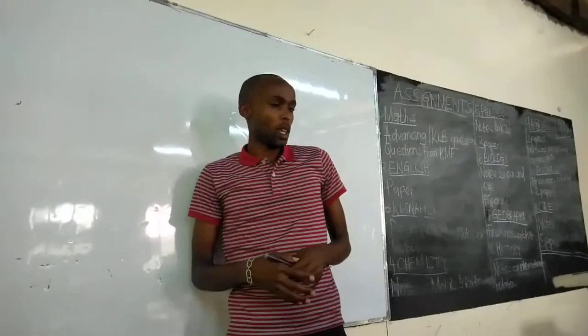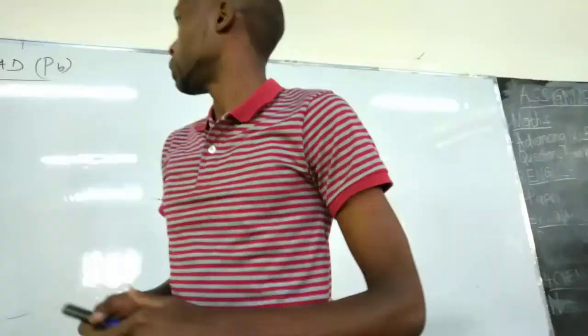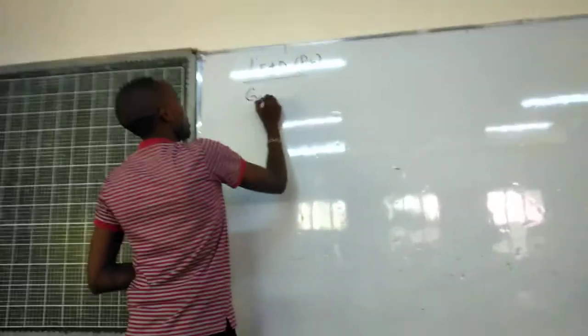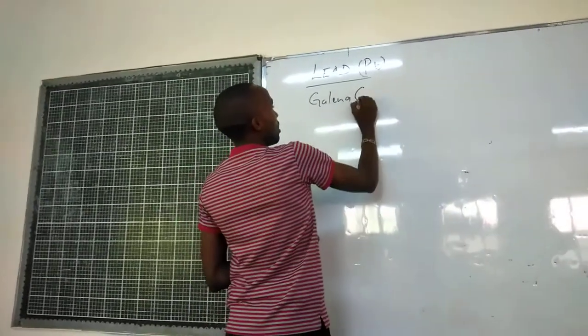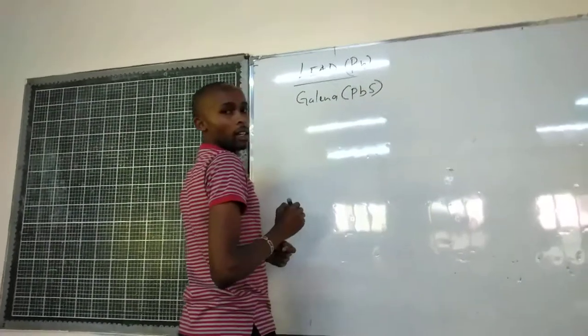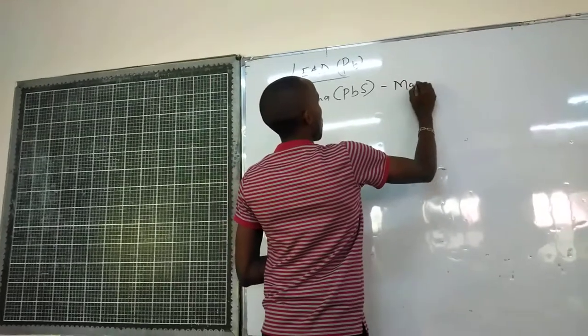Now, in Lead, there is not much to talk about. So we start with the ore, which is known as Galena, whose formula is PbS. So this is the main ore.